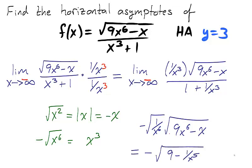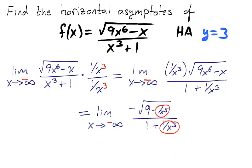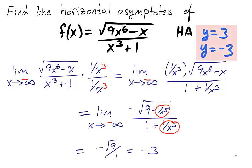We can distribute 1 over x to the sixth into the square root. The red expressions approach 0 as x approaches infinity. Therefore, the limit as x approaches negative infinity of the function is negative 3. Therefore, the function has two horizontal asymptotes: one at y = 3 and another at y = −3.